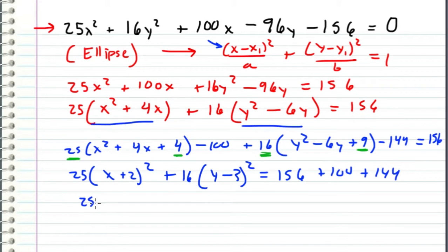And when we simplify this, we get 25 times x plus 2 squared plus 16 times y minus 3 squared is equal to 400.